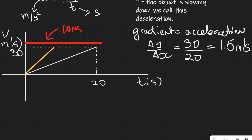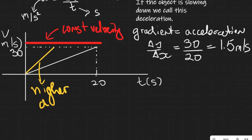The yellow line has a much higher acceleration. The red object moving at a constant velocity is shown as a flat line. The gray line has a lower acceleration of 1.5 meters per second squared, which we just calculated.